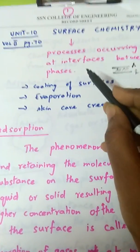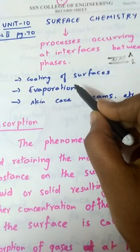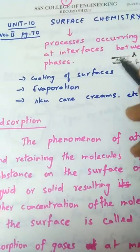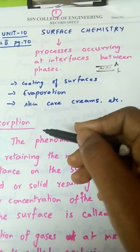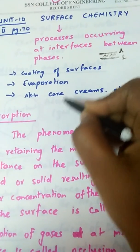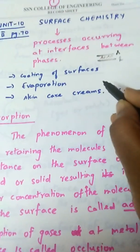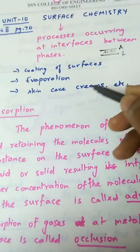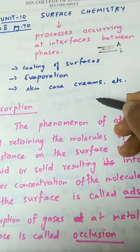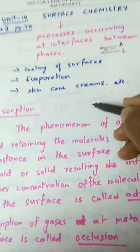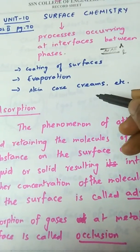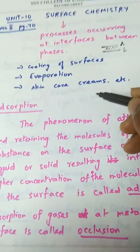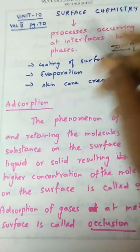There are certain processes which can be coded as examples of surface processes: coating of surfaces — you coat one metal over another, or paint on a metallic surface. Evaporation is also a surface process. Skincare creams are another example — when you apply a cream on the skin, it gets adsorbed rather than going into the bloodstream.